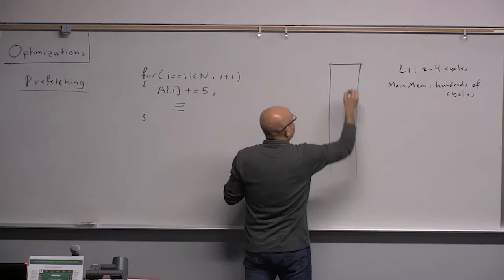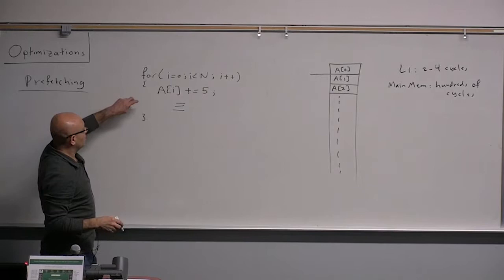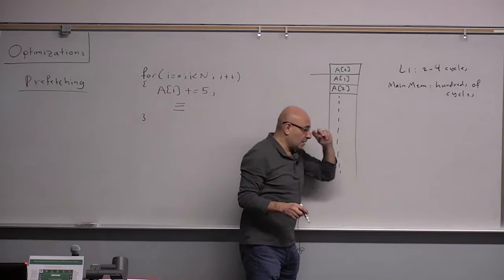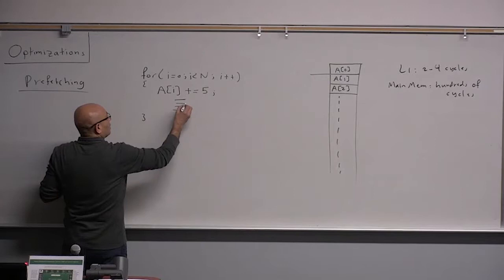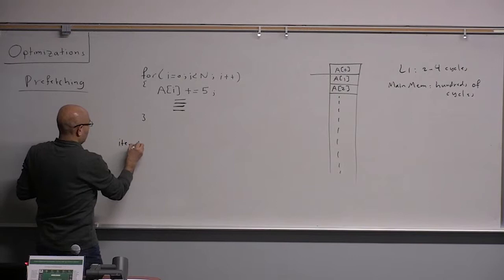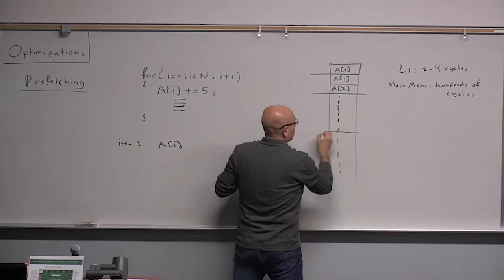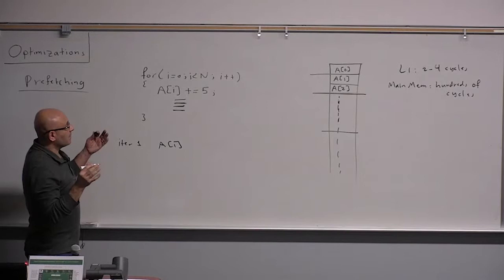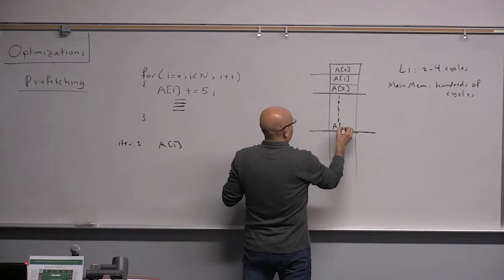If we have this array — A of zero, A of one, A of two, and so on — the question is how many iterations ahead should we be fetching? For example, in iteration one, we will be accessing A of one. When will we have a cache miss? When you go beyond the cache line.